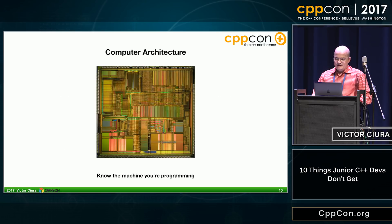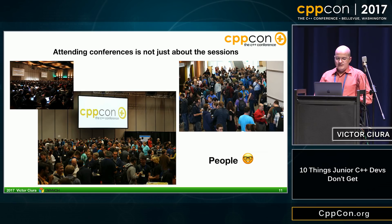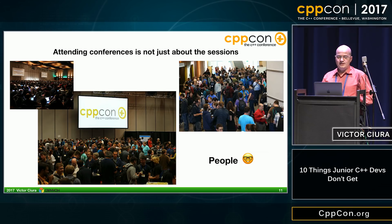Finally, another thing that junior developers don't get is computer architecture — the fact that we actually program silicon and we have to be aware about memory and CPU architecture and caches. And why not? Attending conferences is not just about the sessions. It's about people and meeting people and having ad hoc discussions and getting energized, and going back home and telling the story.